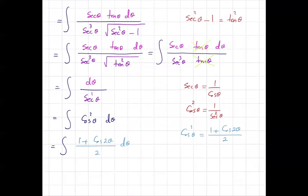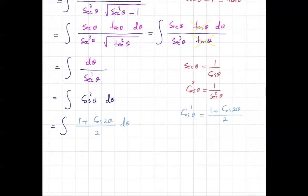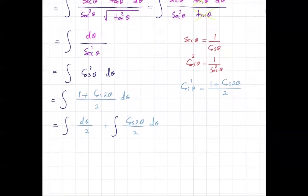We can separate this into the sum of two integrals: the integral of 1/2 d theta plus the integral of cosine 2 theta divided by 2 d theta. The first integral is easy to calculate — it equals theta divided by 2. For the second integral we need to use a u-substitution.